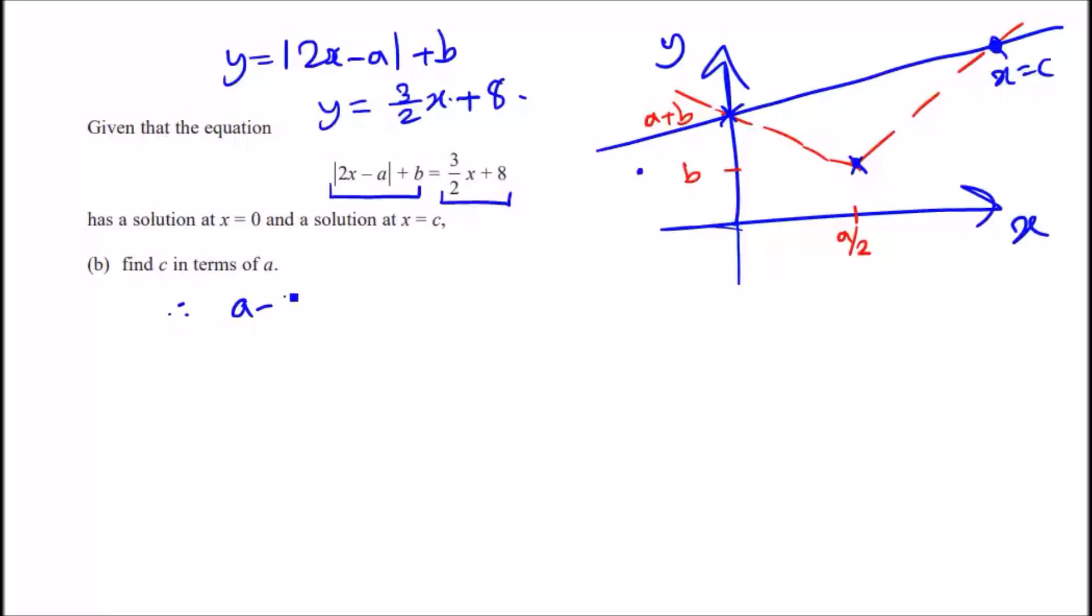So we can say a minus 2x plus b must equal 3 over 2x plus 8; that's when it intersects at x equals zero. That means the other equation, the same equation actually but when it's going upwards with a positive gradient, would be the original 2x minus a plus b, and that's going to intersect here at point c. So that would be 2x minus a plus b equals 3 over 2x plus 8 at x equals c.